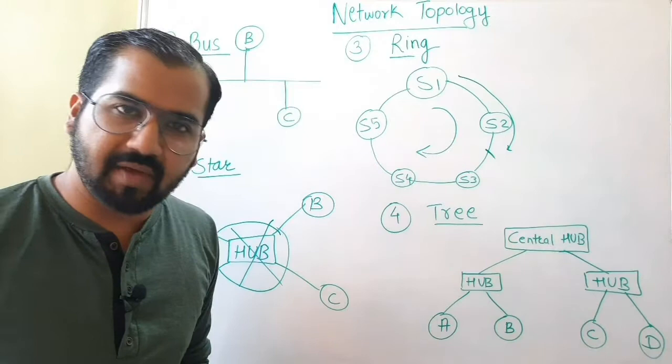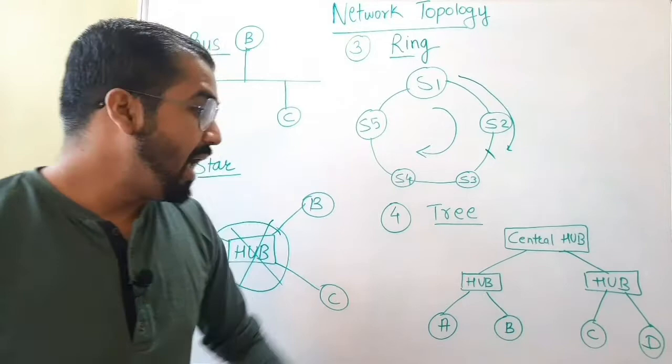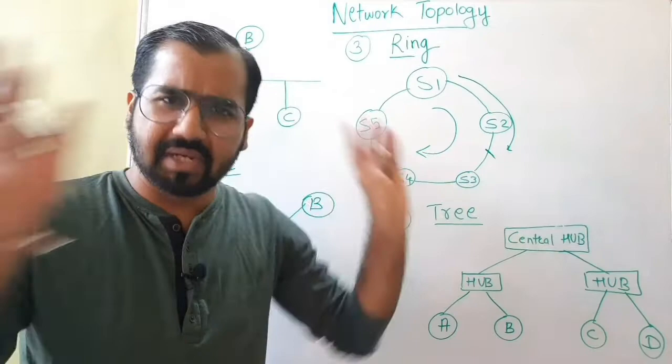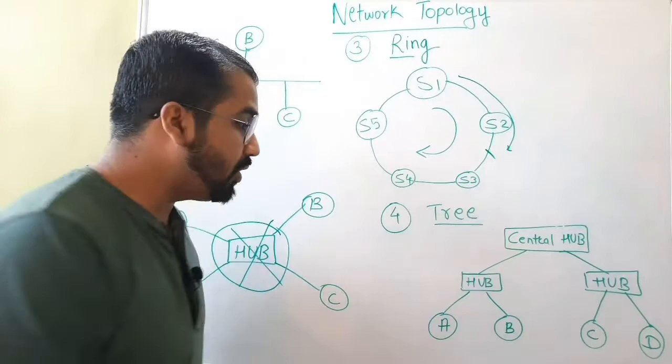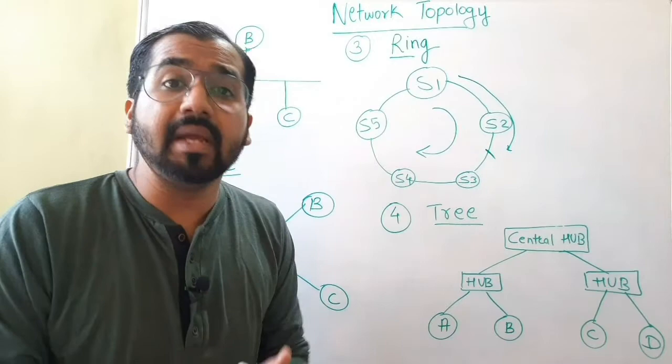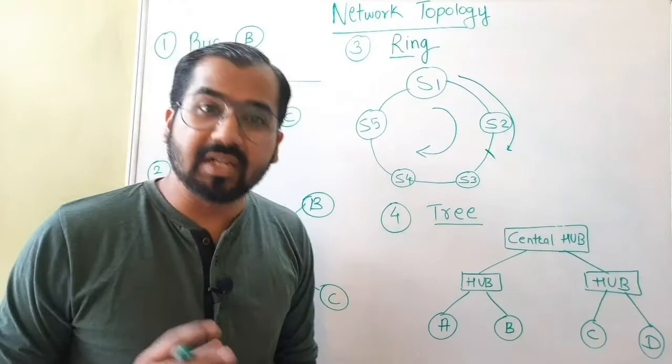One big disadvantage you can observe here is: if this central hub goes down or fails for some reason, then the whole network will be distorted — it will crash and also fail. That is a very big disadvantage of tree topology.